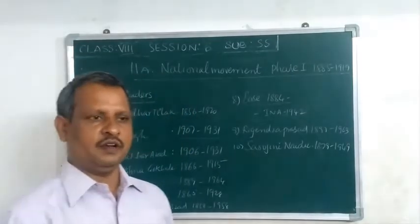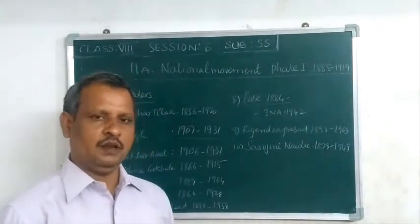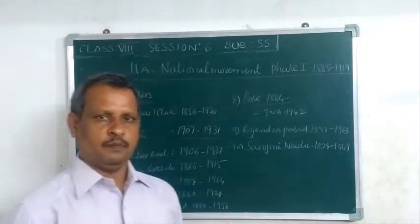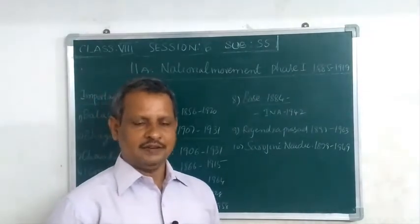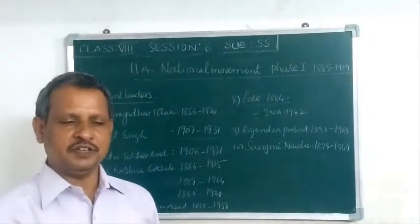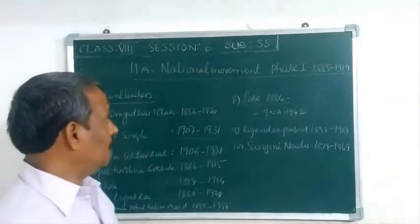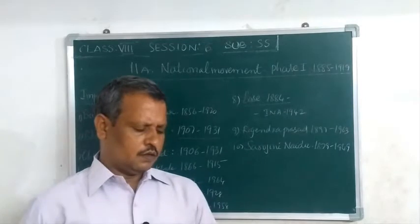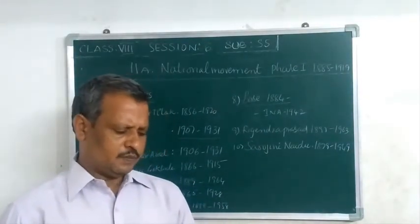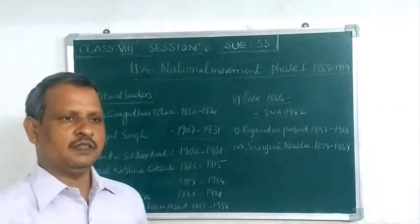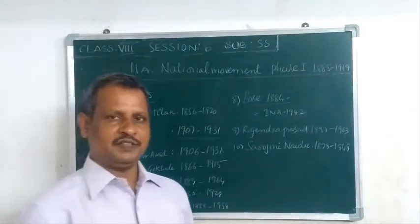In this section, we will learn why Bengal was partitioned and who partitioned Bengal. The partition of Bengal was carried out by Lord Curzon in 1903, and the British government officially implemented the partition in 1905.